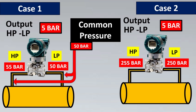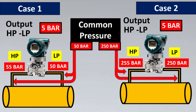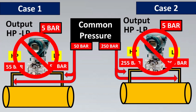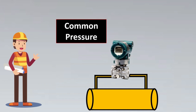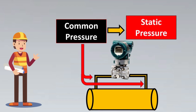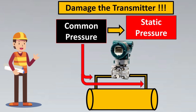There is something called common pressure. In the first case, 50 bar is commonly hitting both legs of the transmitter, while in the second case, 250 bar is commonly hitting both legs. This pressure that hits both legs at the same time of a DP transmitter is termed as static pressure in the engineering world.